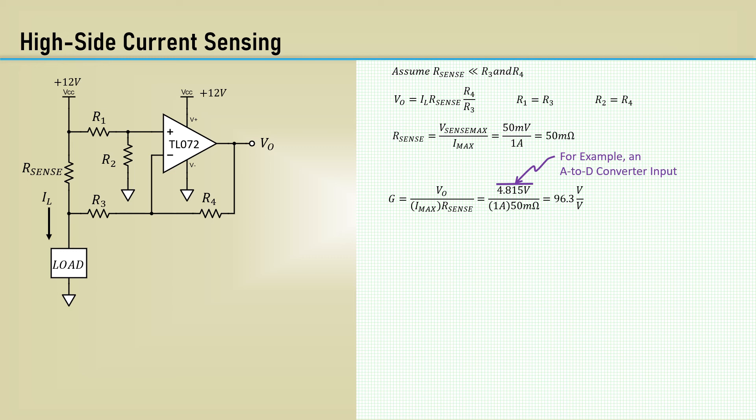You may decide to round that down to something more meaningful, like an integer, let's say 90. Let R1 and R3 equal 1k and calculate R2 and R4 as 96.3k.